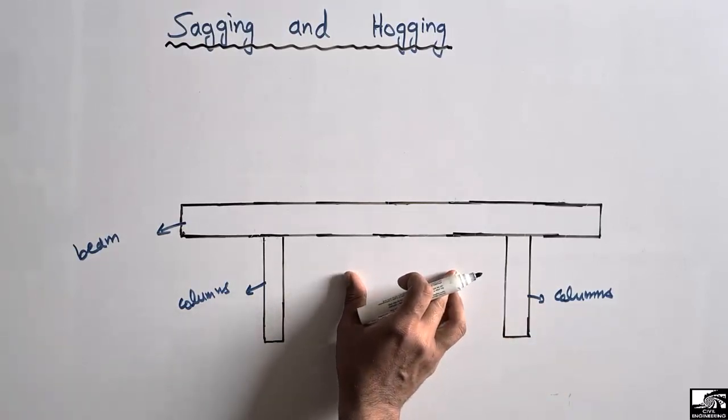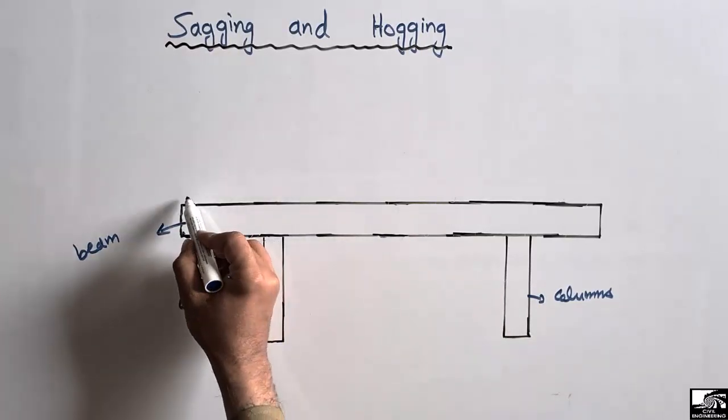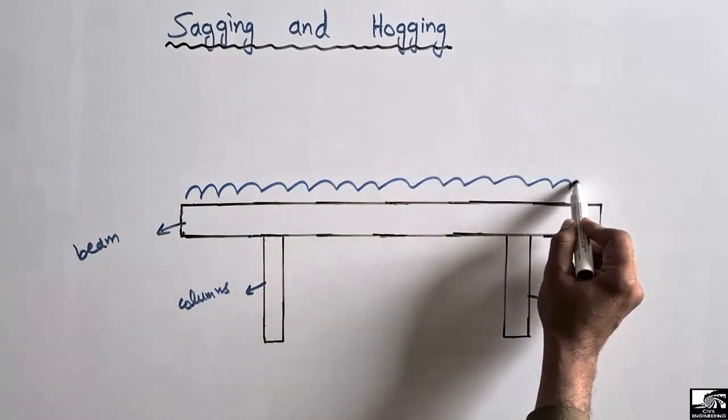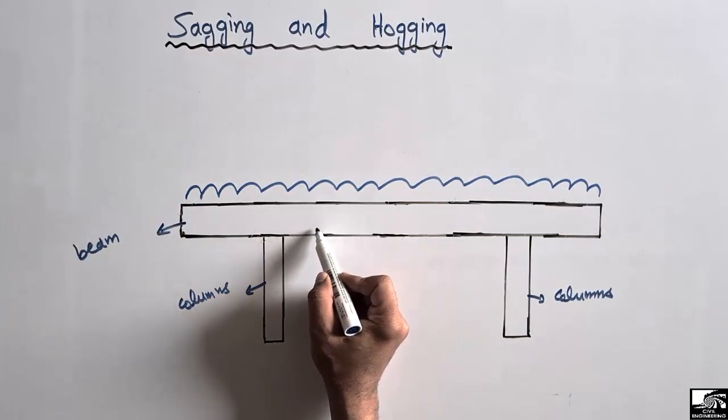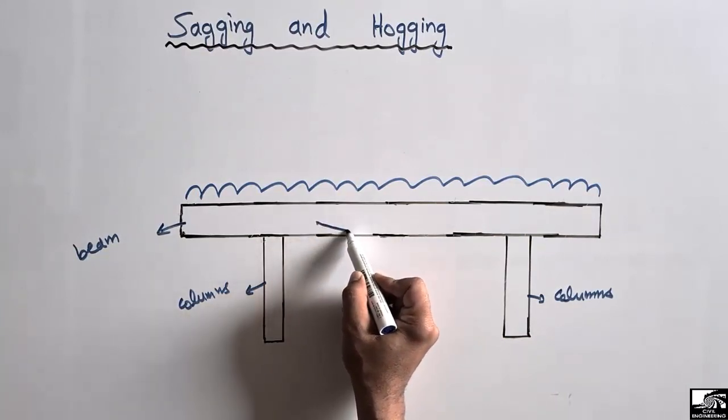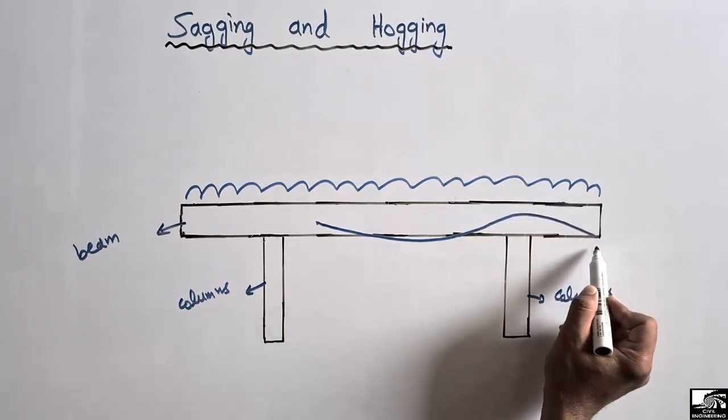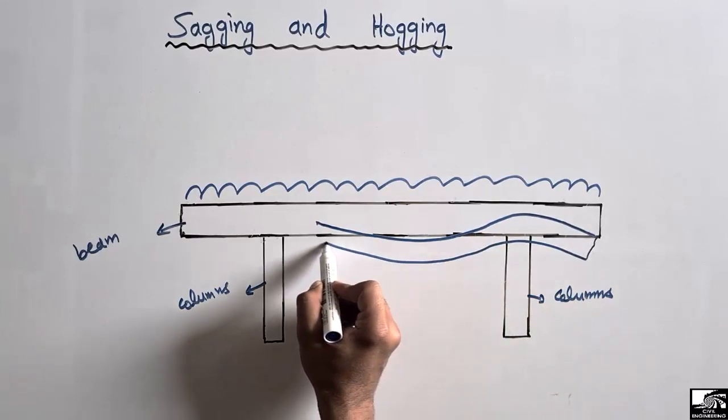Due to this load on the beam, the beam will bend. It will show bending in this way. This is just the graphical representation.